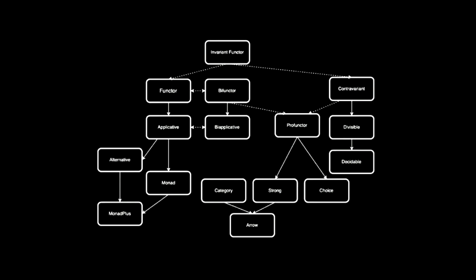And then on the right, contravariant, and then two arrows, one from bifunctor and one from contravariant leading to profunctor, which leads to strong choice, then category and arrow, and then underneath, contravariant directly is divisible and decidable.